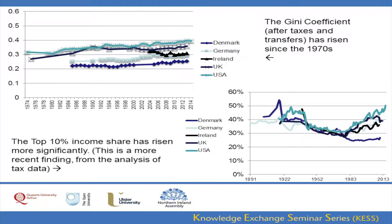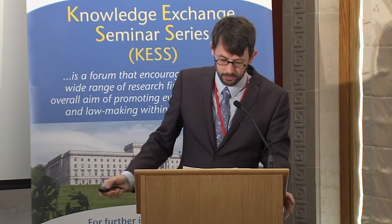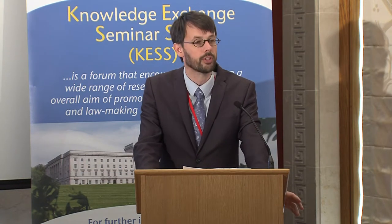For four of the countries — the exception being Denmark — there has been a very steep rise in the income share held by the top 10 percent. This is a longer timeline, beginning in 1891 for some of the data. You can see that the Second World War is followed by 30 years of relatively low income inequality, and then a rise in the share of the top 10 percent. In the United States, the top 10 percent now take more than half — just over 50 percent — of all market income, a level last seen in 1939. In the United Kingdom, the top 10 percent take 39.1 percent of all market income, compared to 27.8 percent in 1975.